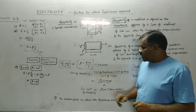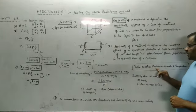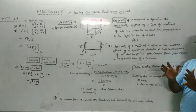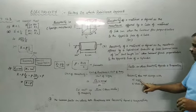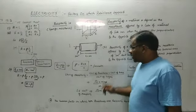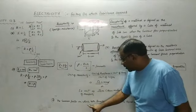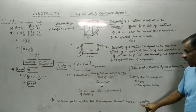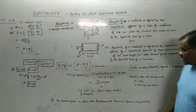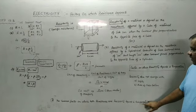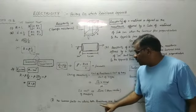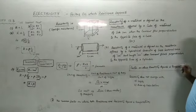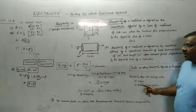The only factor on which resistivity depends is temperature. Resistance is affected only by temperature, not by length or area of cross-section alone in the case of resistivity. The common factor on which both resistance and resistivity depend is temperature — if temperature increases, resistance increases. Resistivity does not change with length or area of cross-section.